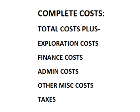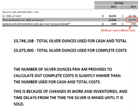For complete costs, I took the remaining expenses — exploration costs, administration costs, finance costs and credits, and taxes — and divided those costs by the number of payable silver ounces produced of 25,075,000, as provided in the 2012 annual report. I then added those costs to the total cost to obtain a complete cost per ounce.